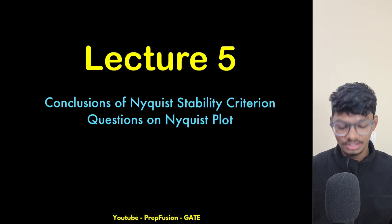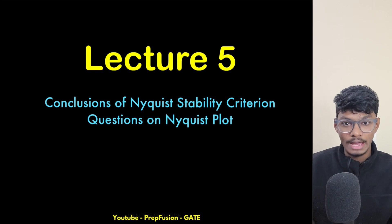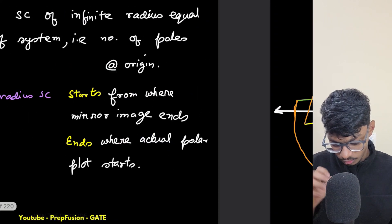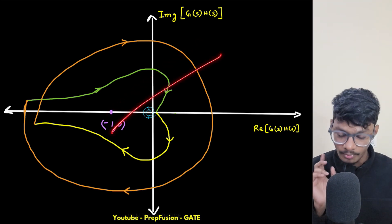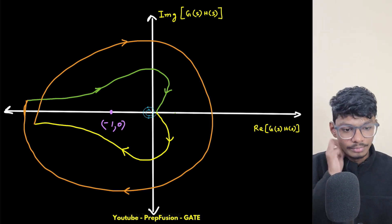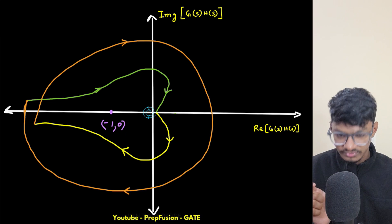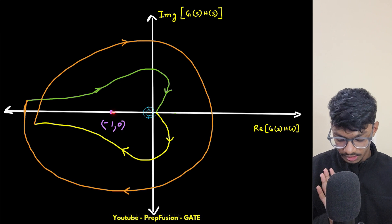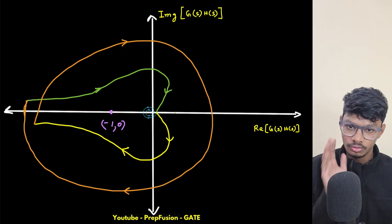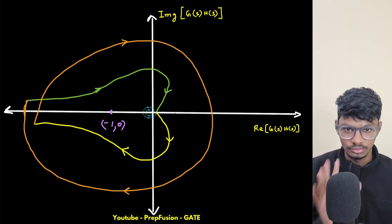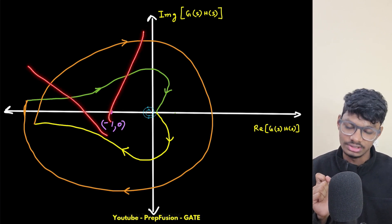Hey everyone, I'm Anish, welcome back to Prefusion. We're starting Lecture 5 of the Nyquist plot. Before the main topic, I want to conclude what happened in the previous lecture. I told you that you can draw one straight line and check how many cuts there are to find the value of N, the number of encirclements. But that method may cause confusion if there are encirclements not around the minus 1,0 point.